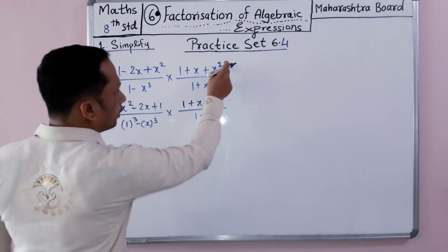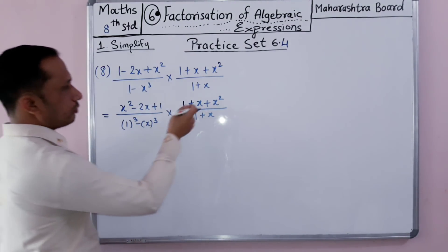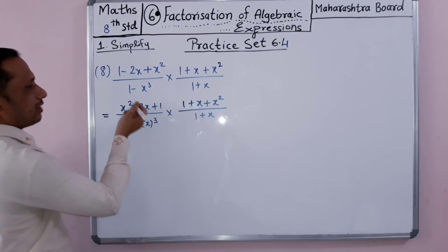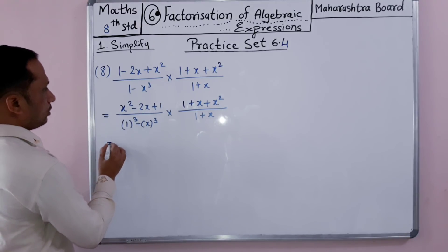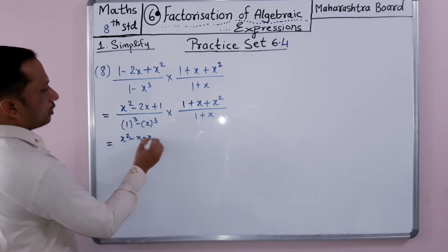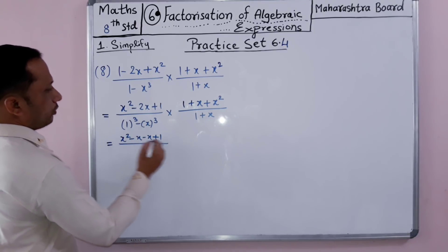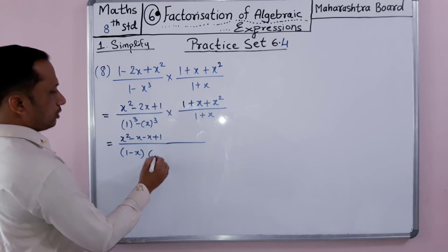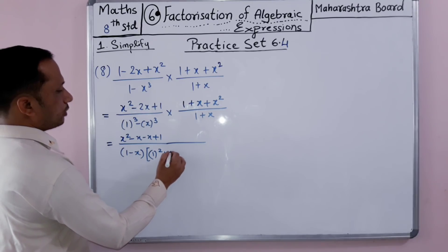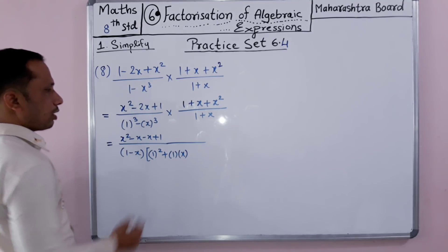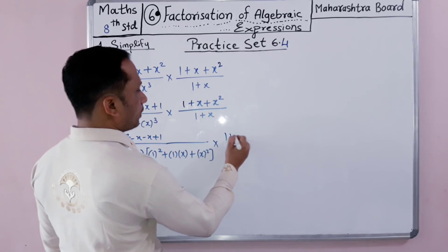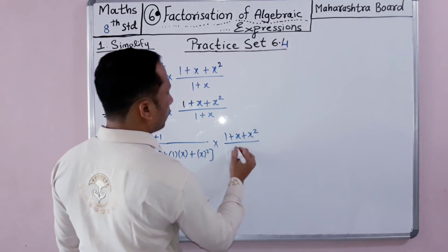Looking at the given problem again: 1 plus x plus x squared in the numerator. We factorize the numerator 1 minus 3x plus x squared by rearranging to x squared minus x minus x plus 1 using minus x times minus x for the minus 2x term. This gives factors x minus 1 and x minus 1. Using the a cubed minus b cubed formula: 1 minus x cubed factors as 1 minus x, times 1 squared plus 1 times x plus x squared, which is 1 plus x plus x squared. The second fraction is 1 plus x plus x squared divided by 1 plus x.